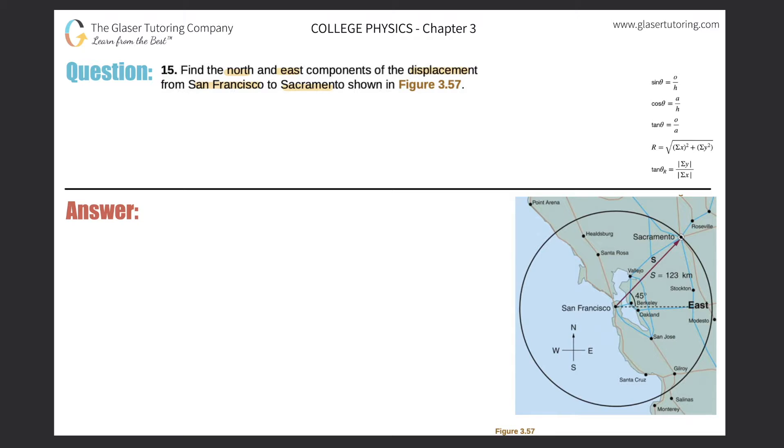Now remember, in terms of my compass directions - north, south, east, west - overlay with the x and y components, right? North is really the positive y. East is really the positive x, south is really the negative y, and west is really the negative x.